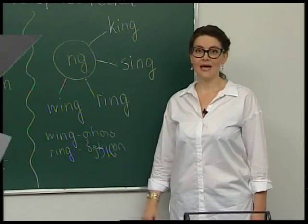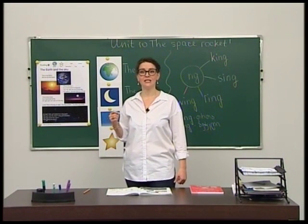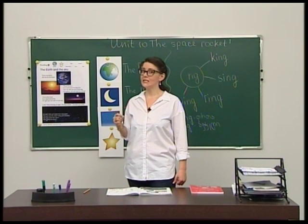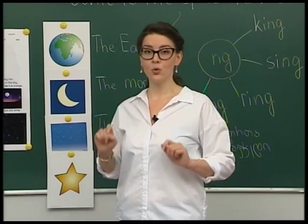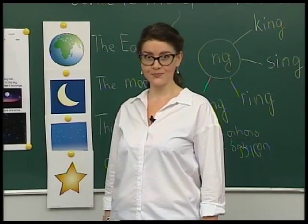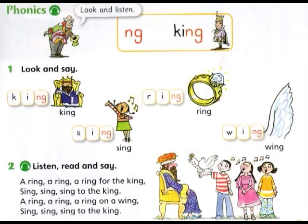Once again, open your books at page 107. Find task phonics — read, listen, and repeat. Look and listen. A ring, a ring, a ring for the king. Sing, sing, sing to the king. A ring, a ring, a ring on a wing. Sing, sing, sing to the king.